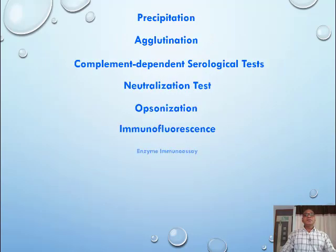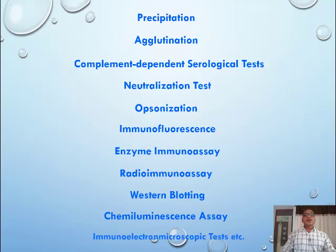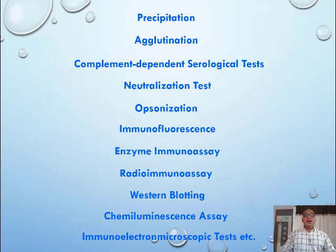The following are examples of antigen-antibody reactions: precipitation, agglutination, complement-dependent serological tests, neutralization, opsonization, immunofluorescence, enzyme immunoassay, radioimmunoassay, western blotting, chemiluminescence assay, and immunoelectron microscopic tests.